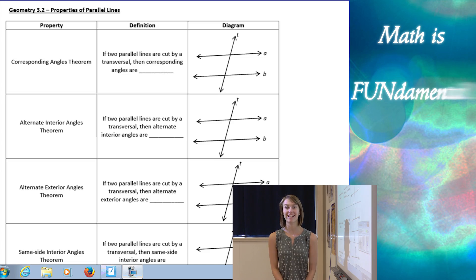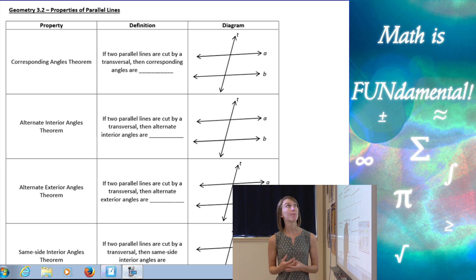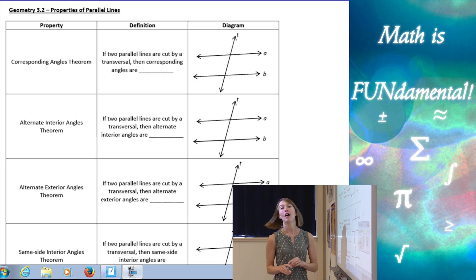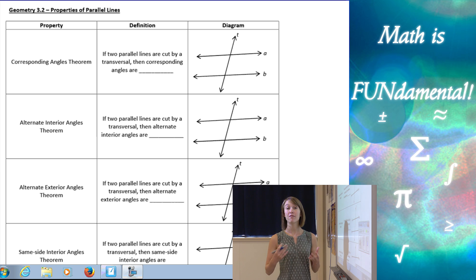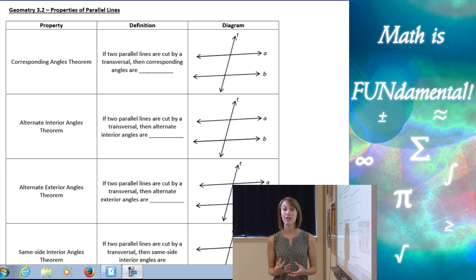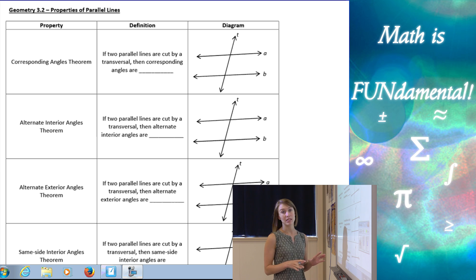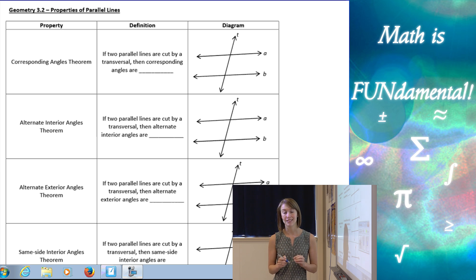Welcome to Math is Fundamental. Today we're going to talk about some angle properties using parallel lines and transversals. In the last lesson we learned about corresponding angles, alternate interior angles, same side interior, and alternate exterior angles — we defined all of those. Today we're going to take it one step further and learn some theorems about those types of angles. Each one of these theorems requires parallel lines.